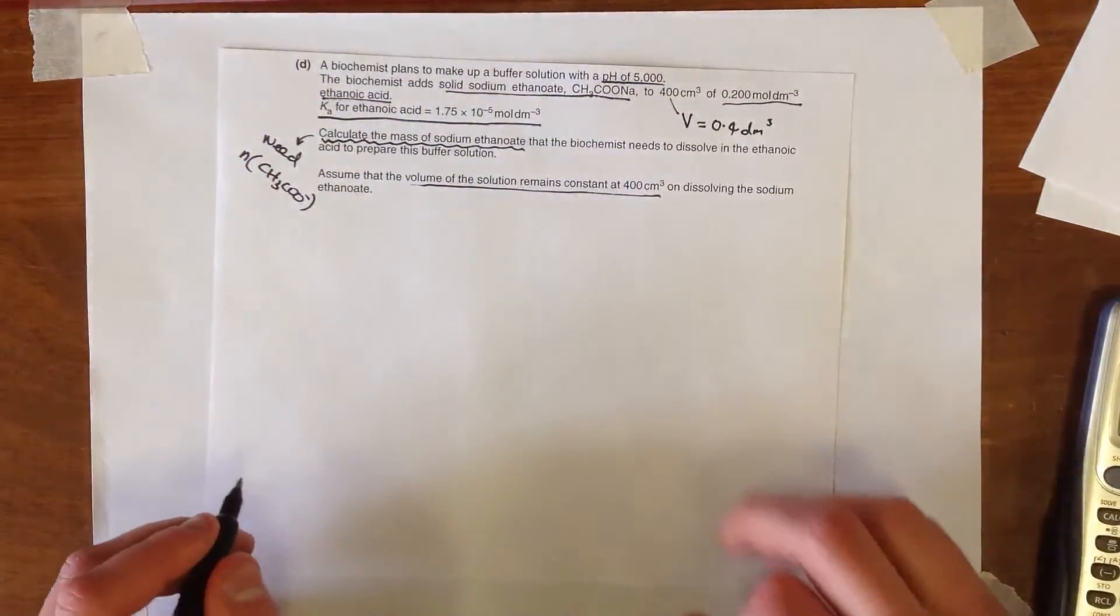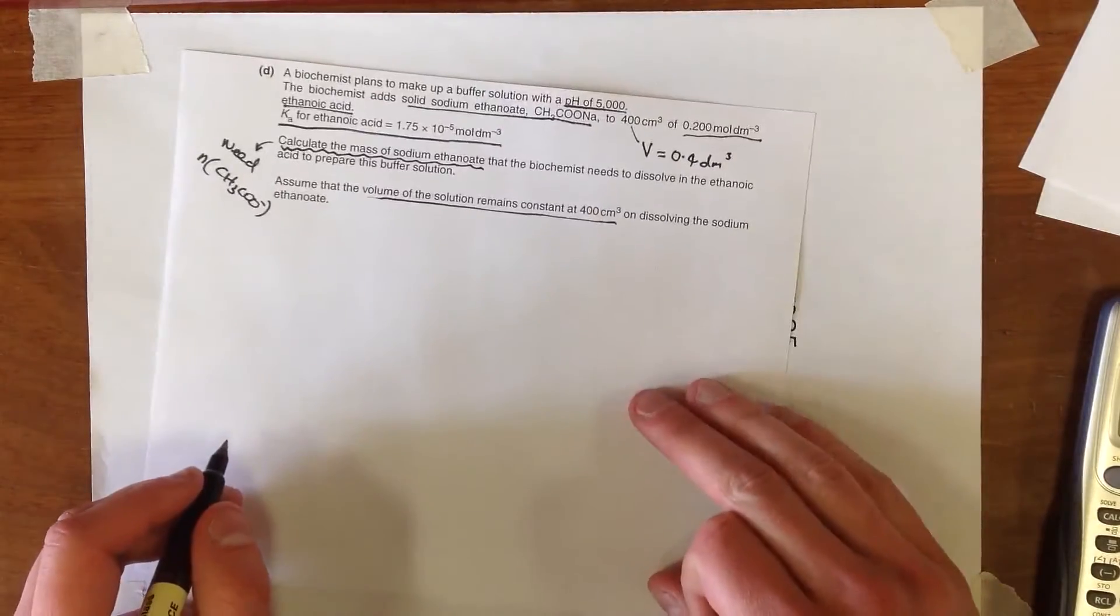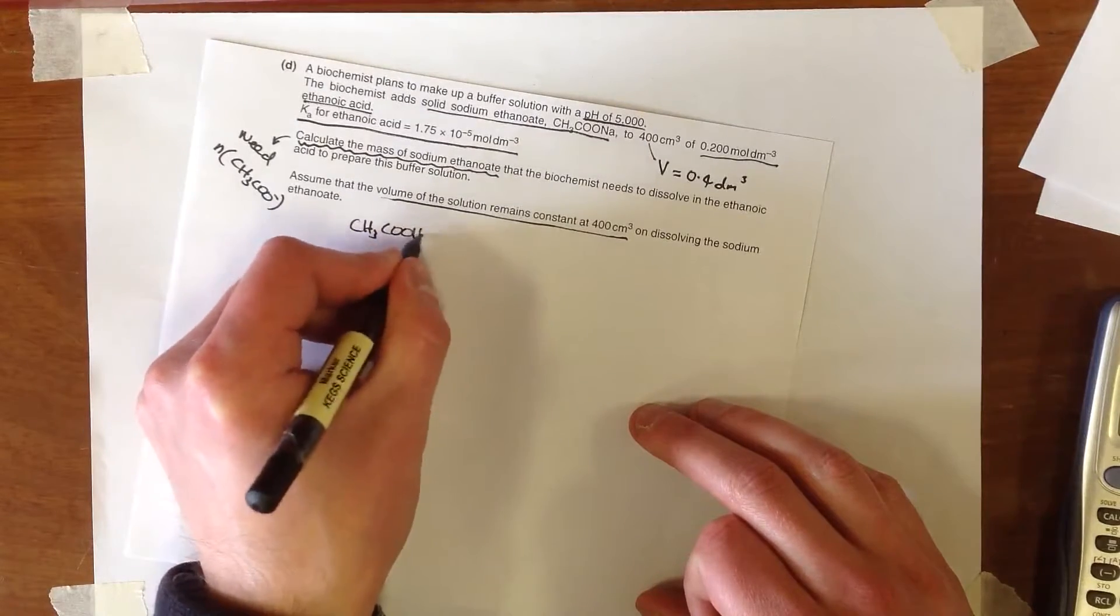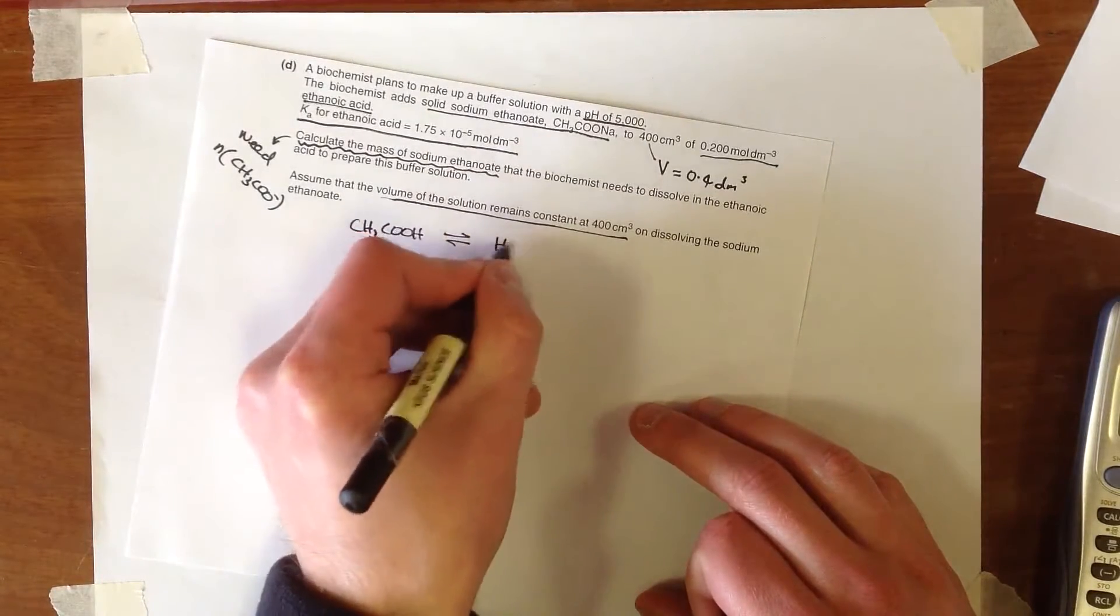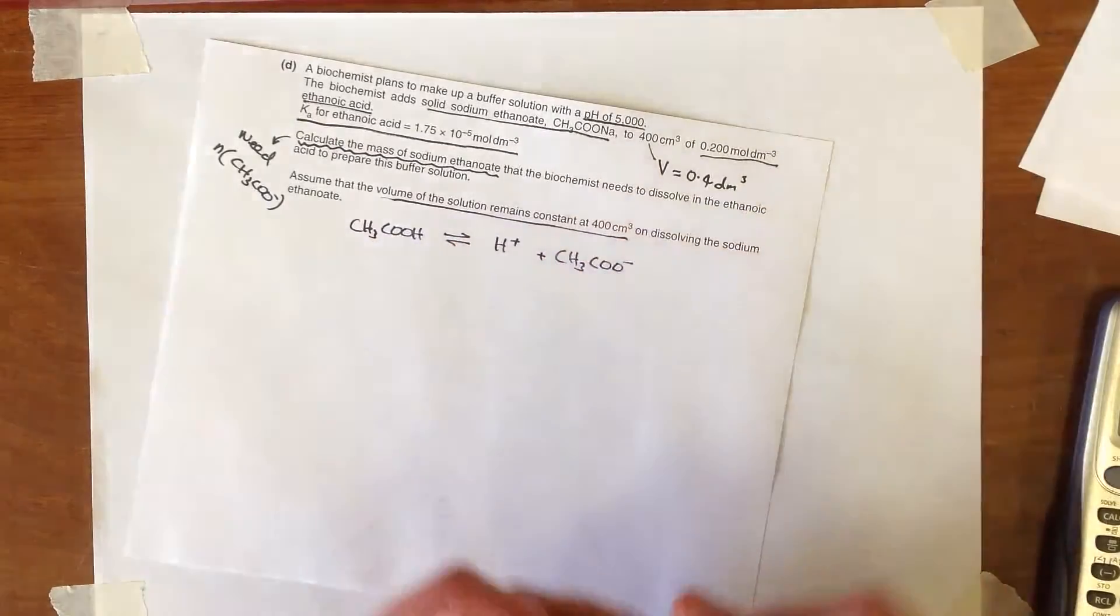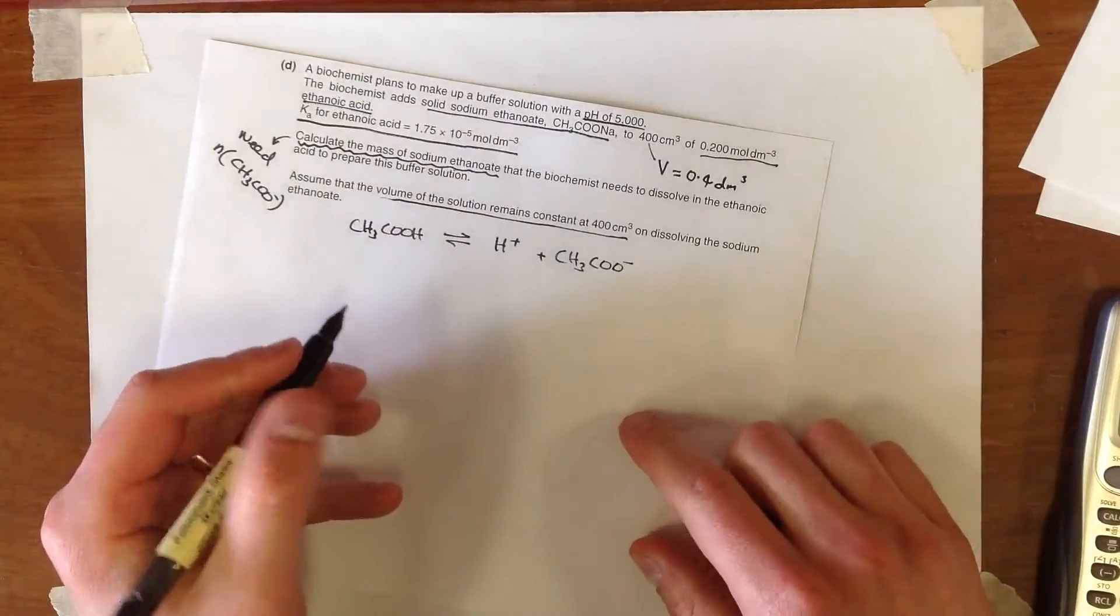So when we're thinking about buffers, it's useful just to have the equilibrium down here: CH3COOH is dissociating to give H+ and CH3COO-. So that's what's actually happening in this buffer.